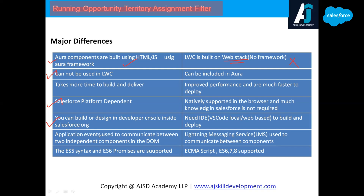For communication between components: in Aura there are application events used to communicate between two independent components inside the DOM - Document Object Model. When components are rendered in the browser, they form a tree structure called the DOM. Application events are used in Aura to communicate between two components that have no parent-child relationship. In LWC, we use a service called Lightning Messaging Service to communicate between two independent components.